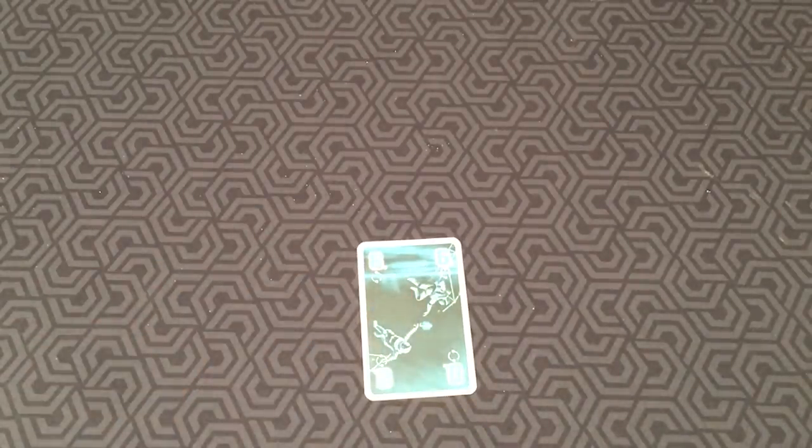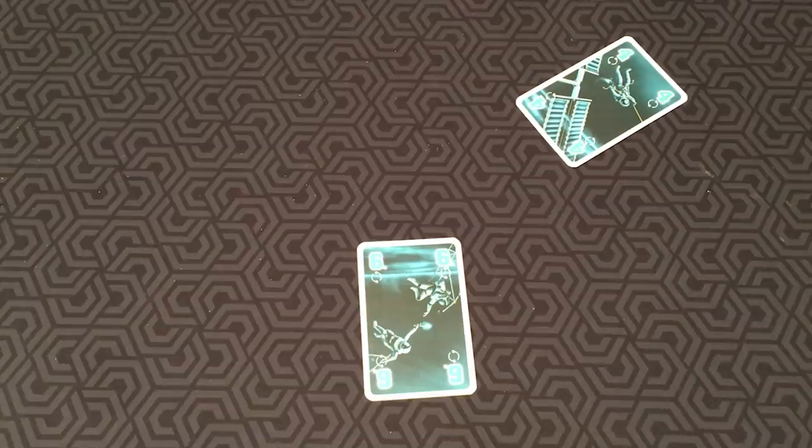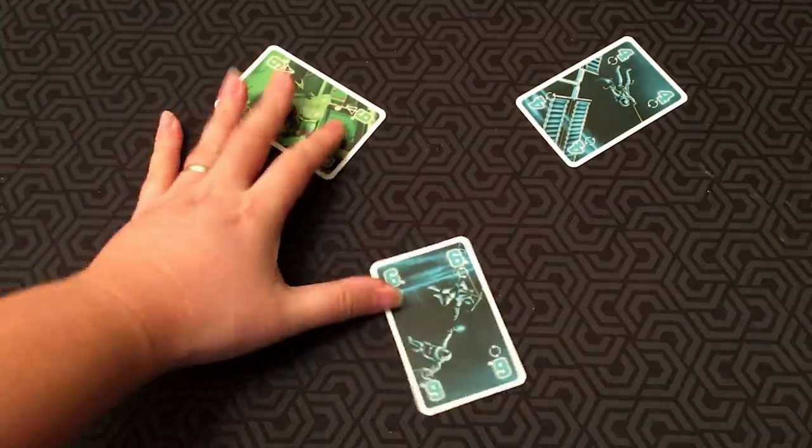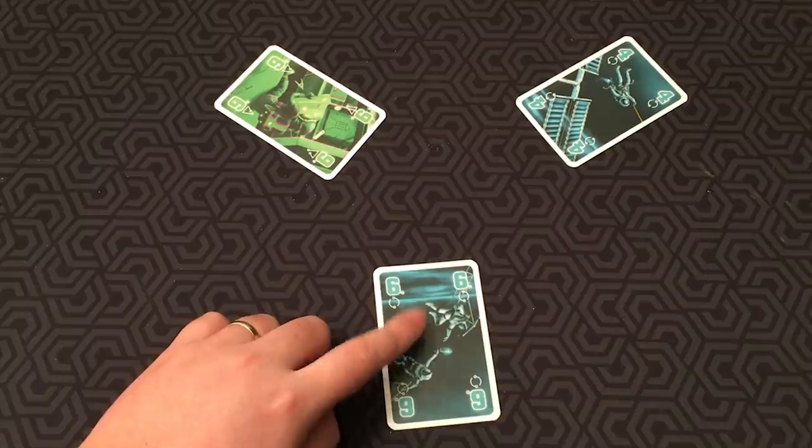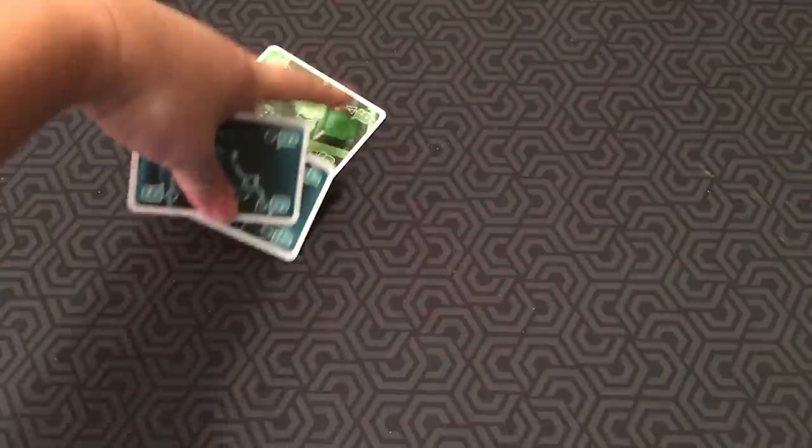If you are not able to follow suit, because you don't have a color of that card, you can play any card. In this case, you could play a green 9, but in this case, the original suit's winner, the highest number, wins. So this card would still win, even though this is a higher number. You always got to follow suit if you have a suit of that color.